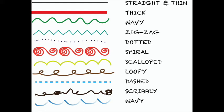As you can see in this example, we have straight thin line, thick line, wavy line, zigzag line, dotted line, spiral line, scalloped lines, loopy lines, dashed line, scribbly line, and wavy line.